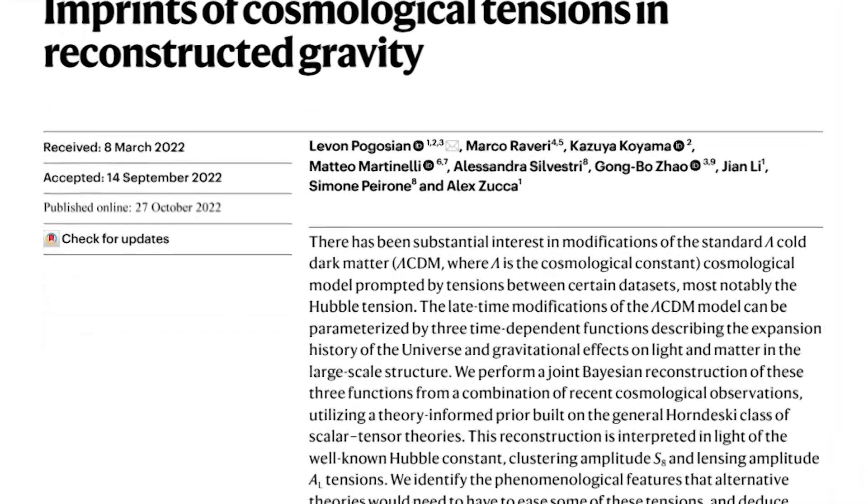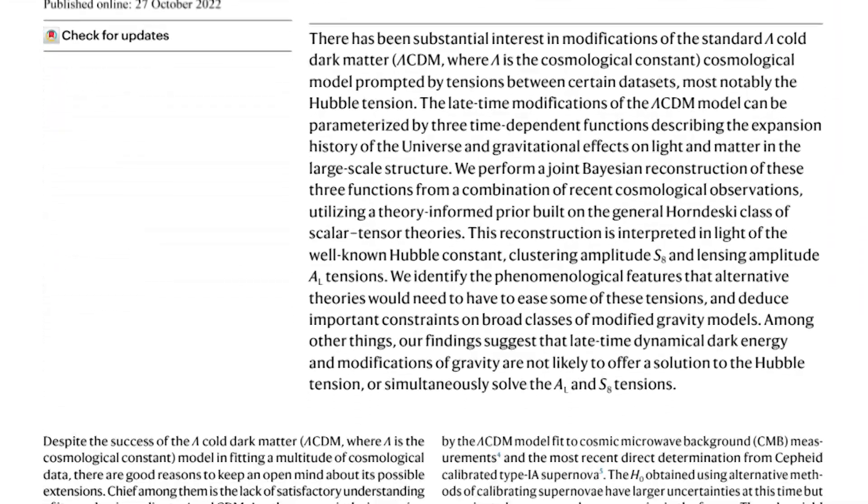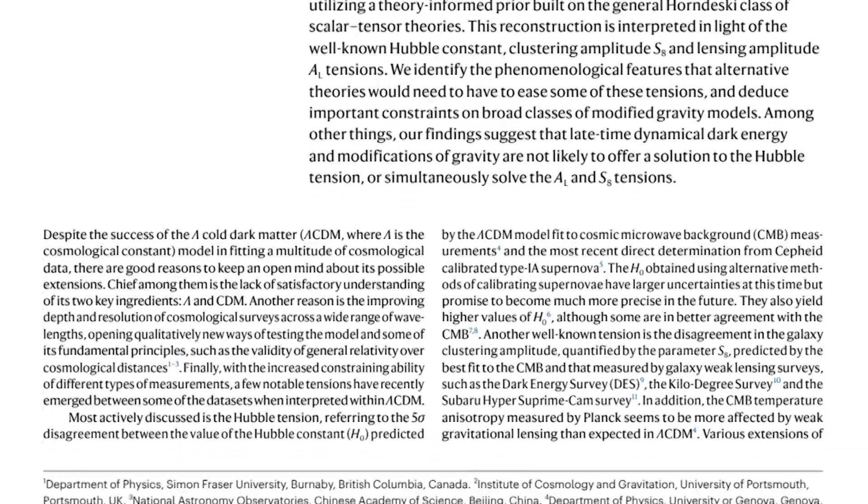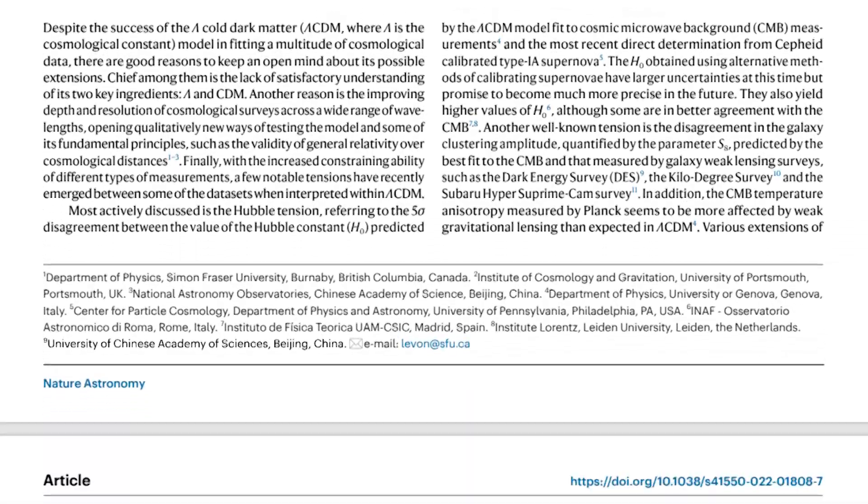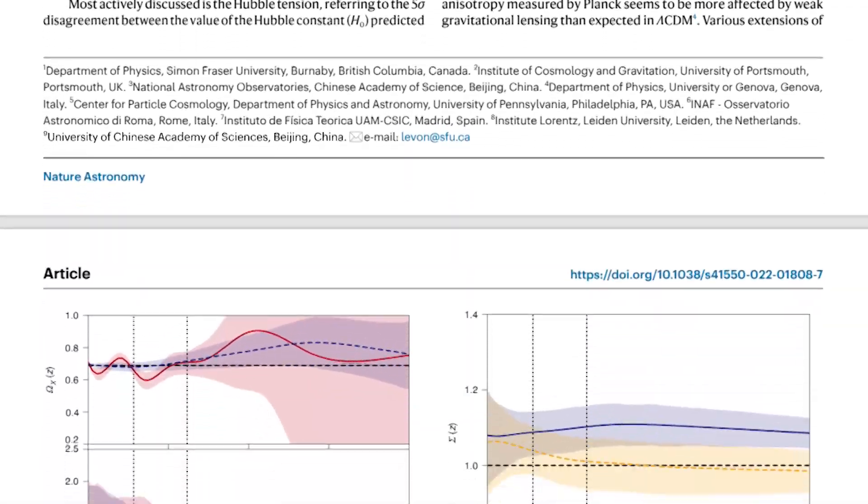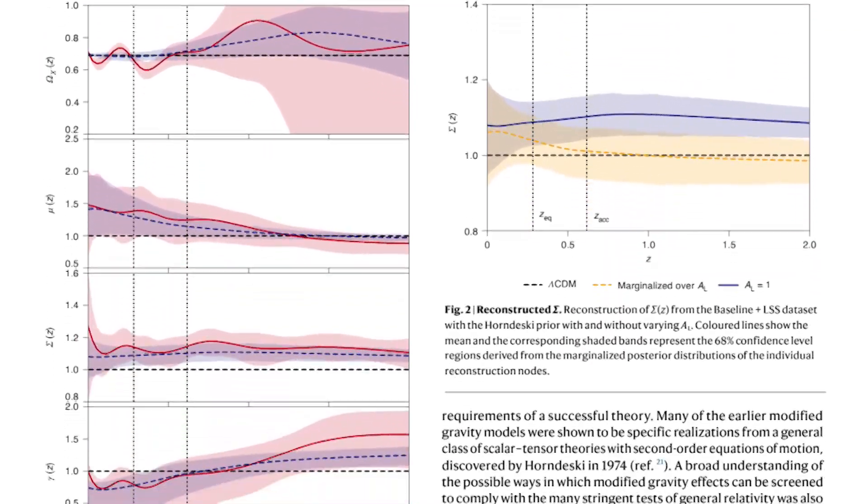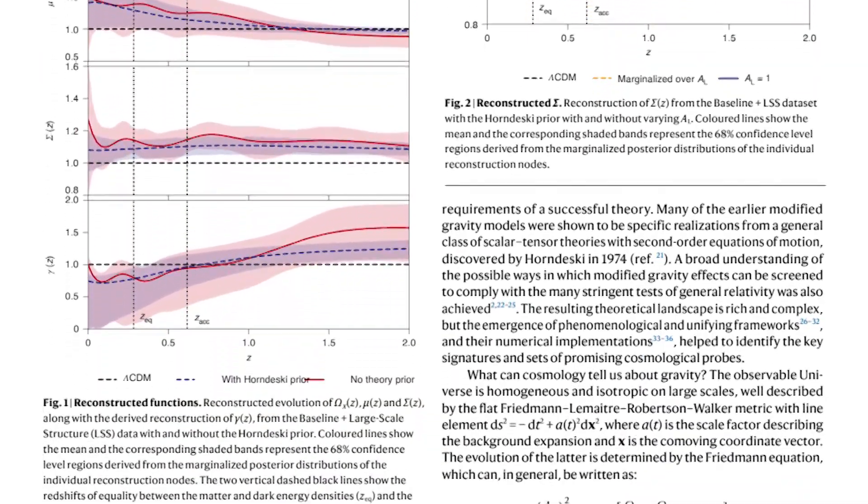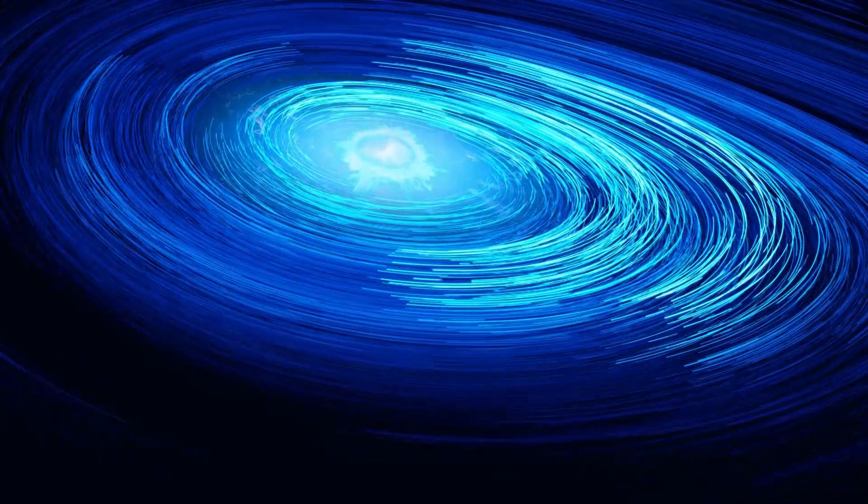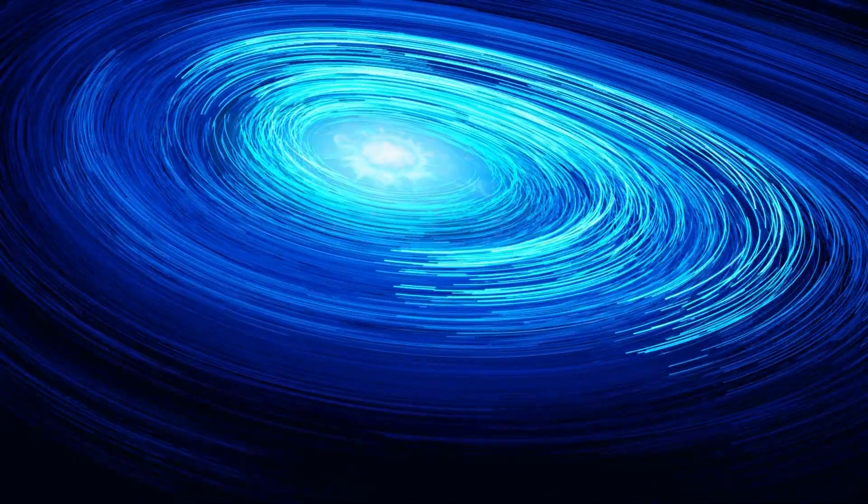Einstein's theory was recently put to the greatest challenge in new research published in Nature Astronomy. Their findings suggest that general relativity may need to be tweaked on this scale. So what exactly is it about that model that makes it flawed?